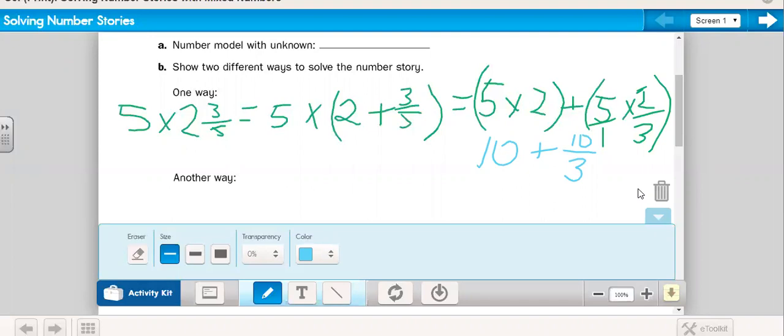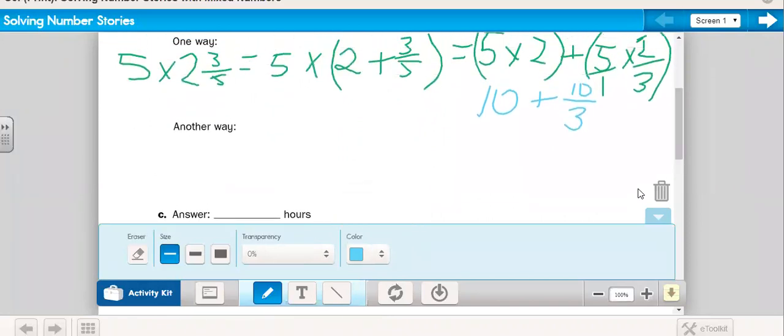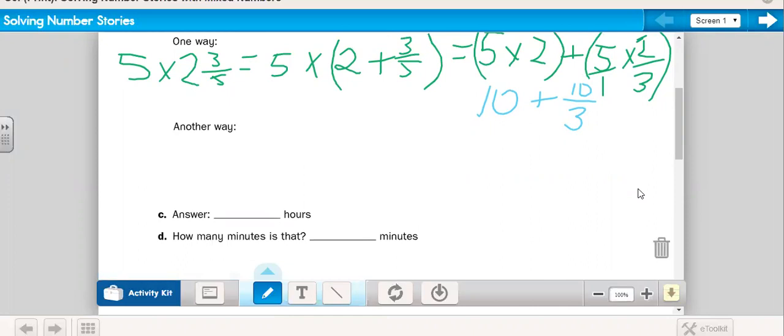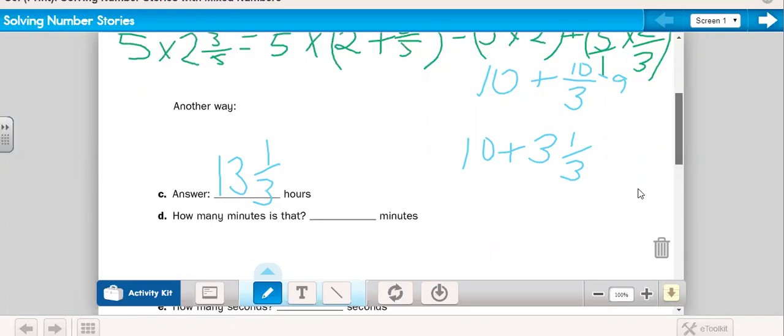We have ten plus fifteen-fifths, and we have to change that improper fraction into a mixed number. We've got the whole number ten and fifteen-fifths. How many times can five go into fifteen? It can go in there three times. So, five times three was really fifteen. We use this with three plus ten. When we add all that together, it gives us thirteen. Ten plus three is thirteen hours.